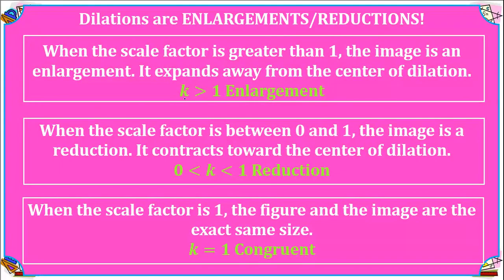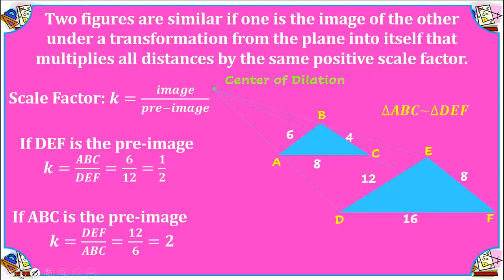We're going to use the variable k to represent scale factor. When we enlarge a pre-image, our scale factor is going to be more than one. If we are reducing a pre-image, our scale factor is going to be between zero and one, such as one-half or one-third. When the scale factor is one itself, we're simply just duplicating the pre-image and get the exact same image.